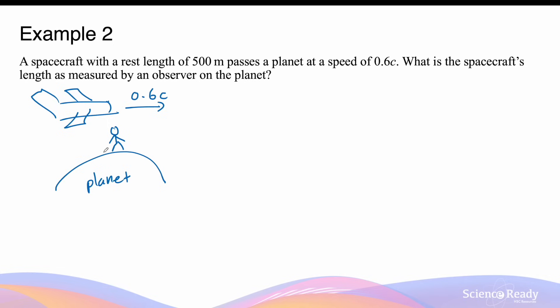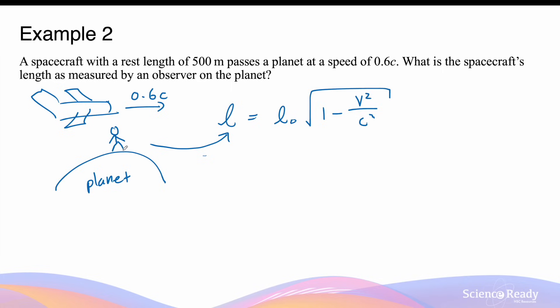As the spacecraft moves past this stationary observer, the length of the spacecraft as measured by this stationary person would be contracted according to the formula: L equals L0 multiplied by the square root of 1 minus v squared divided by c squared. L is the length measured by the person stationary relative to the moving spacecraft, and L0 is the rest length — the length measured if the spacecraft is not moving, or equivalently the length measured by an observer in the same inertial frame as the spacecraft.